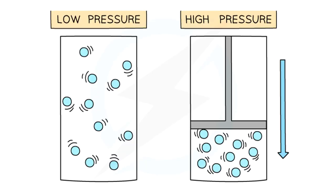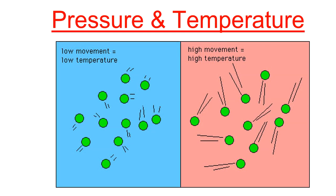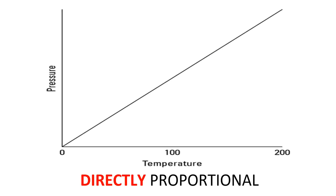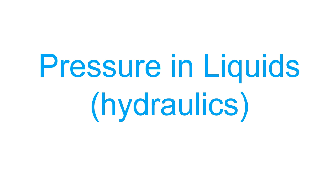Pressure and temperature are directly proportional. At low temperatures, particles move slowly and collide with the container walls with little force. At high temperatures, particles move rapidly, colliding more frequently and with greater force. If you double the temperature, you double the pressure; treble the temperature, treble the pressure.